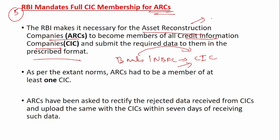ARCs are companies that collect bad loans from banks so that banks can concentrate on their business. These ARCs then collect money from the customers. When a loan is closed, it has to be updated in the borrower's CIBIL or PAN — and for that, ARCs need to be members of the CIC. As per the existing norms, ARCs had to be members of at least one CIC. Now ARCs have been asked to rectify rejected data within seven days of receiving such data. Remember: seven days.